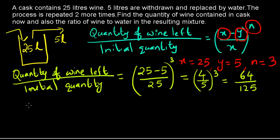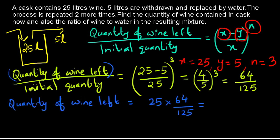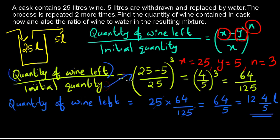We need to find the quantity of wine contained and the ratio of wine to water. The quantity of wine left equals the initial quantity multiplied by this ratio: 25 × (64/125) = 64/5 = 12⁴⁄₅ liters. This can be written using the formula x × ((x - y) / x)^n.